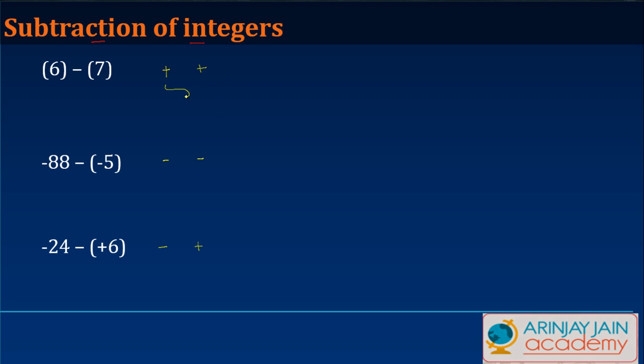In cases where the signs are same, which is like -88 and -5, or 6 and 7, how do you solve it? In this case, you simply have 6 minus 7.